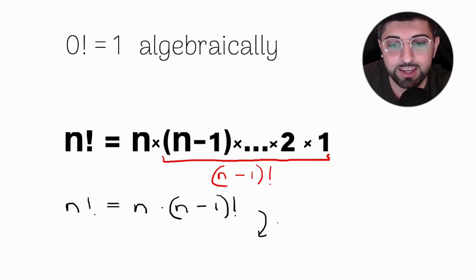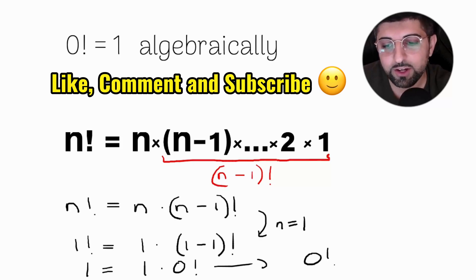Now substitute n = 1 and let's see what happens. One factorial will be 1 × (1-1) factorial, which implies that 1 × 0! = 1. In other words, zero factorial algebraically can be proven to be one.